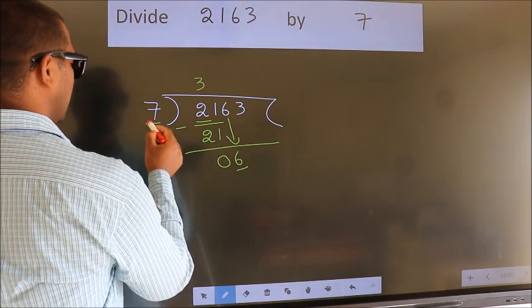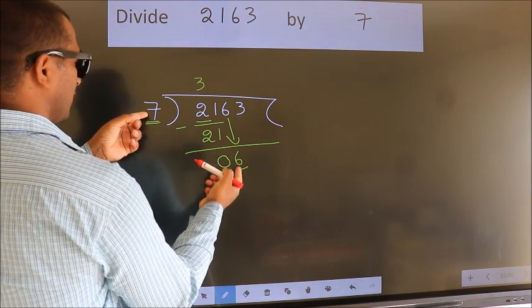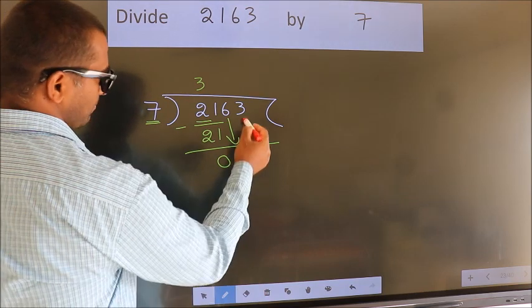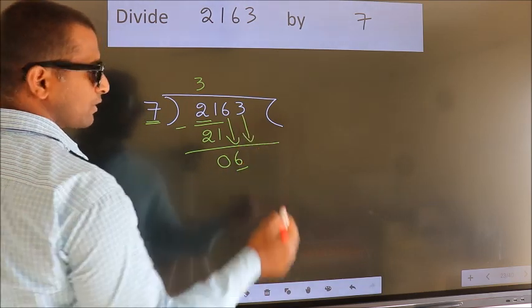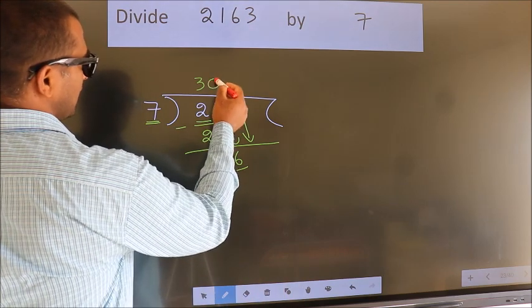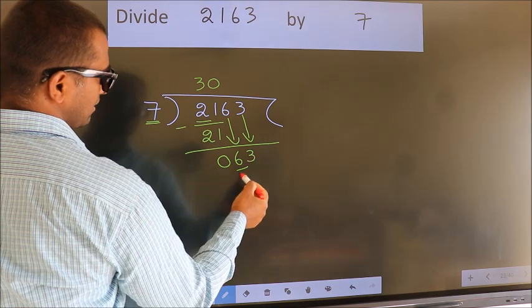Here we have 6. Here 7. 6 is smaller than 7, so we should bring down the second number. And the rule to bring down the second number is to put 0 here. Then only we can bring down this number. So, 63.